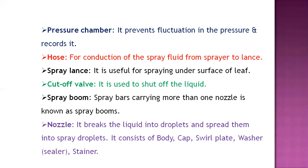The spray boom is used to carry more than one nozzle, where all nozzles such as solid cone, hollow cone, and flat cone types are attached. The nozzle is the most important part of spraying equipment, attached at the end of the sprayer. It is used to break the liquid into droplets and spread them in a uniform pattern. It consists of a body, cap, swirl plate, washer or seal, and strainer.